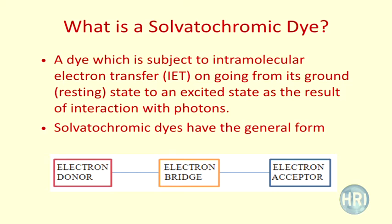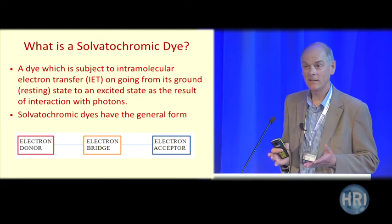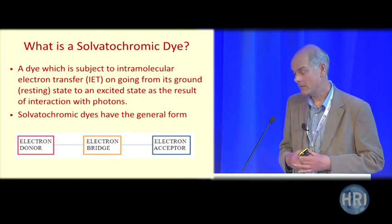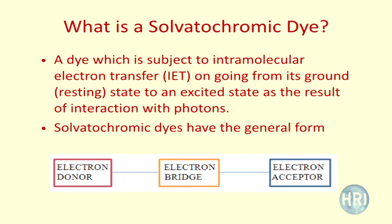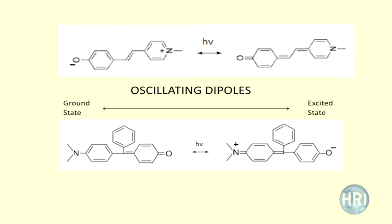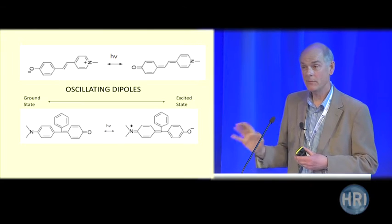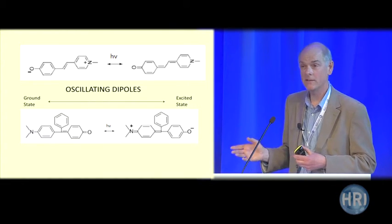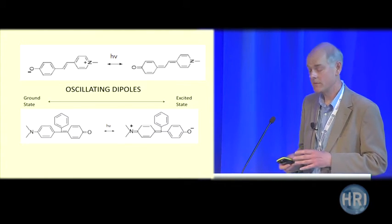So what is a solvatochromic dye? It's a dye that's subject to an intramolecular electron transfer on going from its ground or resting state to an excited state as a result of interaction with light. Basically an electron goes from an electron donor part of the molecule through an electron bridge to an electron acceptor part of the molecule. In the presence of light, an electron is going backwards and forwards several hundred million times a second, so one has an oscillating dipole. And this is what's special about these dyes when it comes to their interaction with potencies.